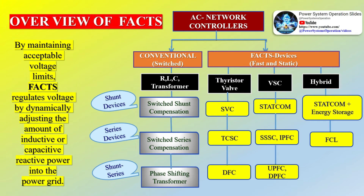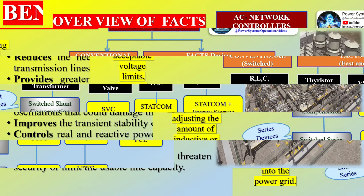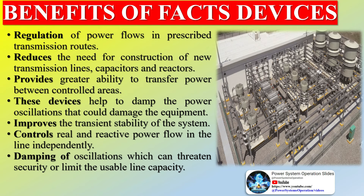Shunt controllers may be variable impedance, variable sources, or a combination of these. In principle, all shunt controllers inject current into the system at the point of connection. As long as the injected current is in phase quadrature with the line voltage, the shunt controller only supplies or consumes variable reactive power. The combination could be separate series controllers or a unified series-series controller.